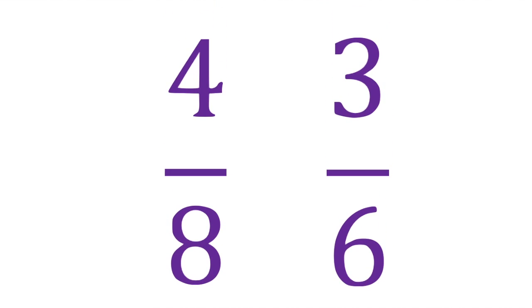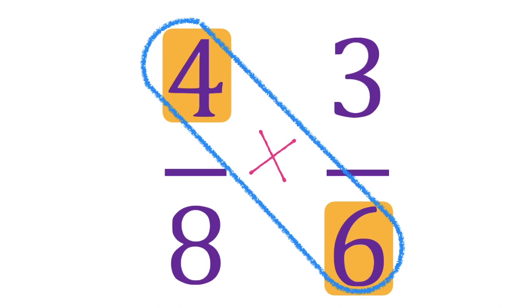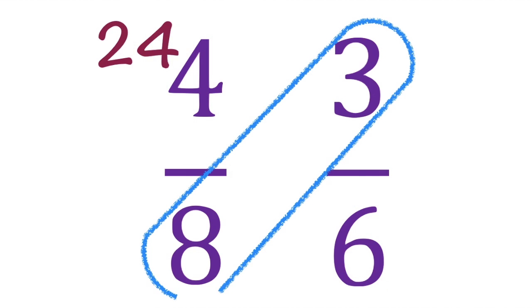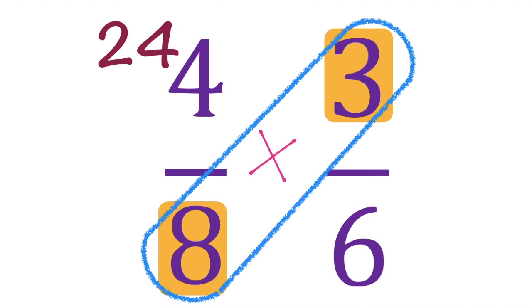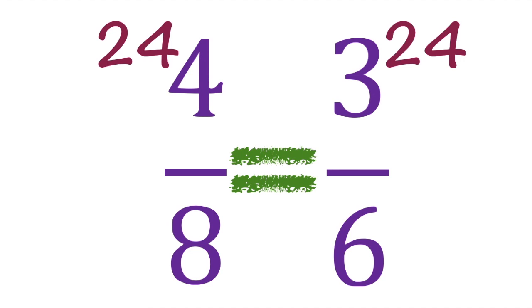How about this one? 4 eighths and 3 sixths. Let's multiply 6 and 4. 6 times 4 equals 24. How about 8 times 3 equals 24. Let's compare 24 and 24. The answer is equal sign. So, 4 eighths is equal to 3 sixths.